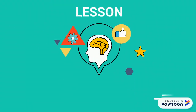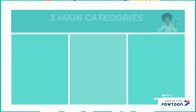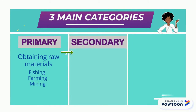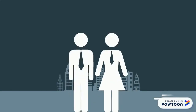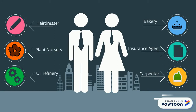Now let's do a quick recap of our last lesson on production. Do you remember the three main categories? Primary, secondary, and tertiary. Every possible occupation is going to fall under one of those three levels — hairdresser, baker, plant nursery worker, insurance agent, oil refinery, carpenter — all of those fall into one of those three levels.